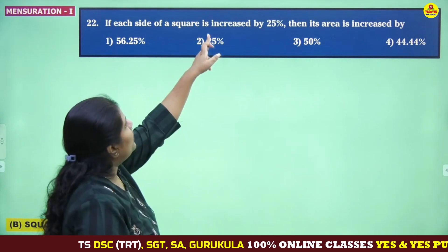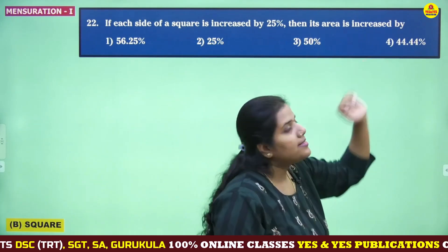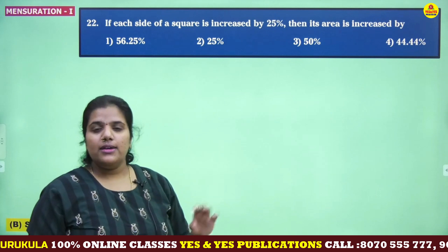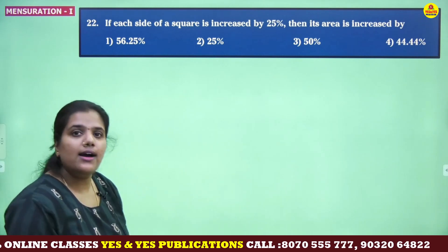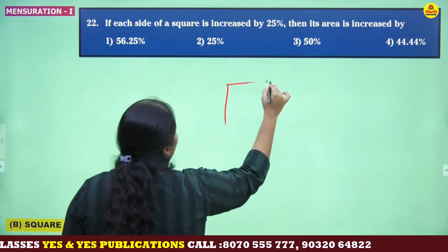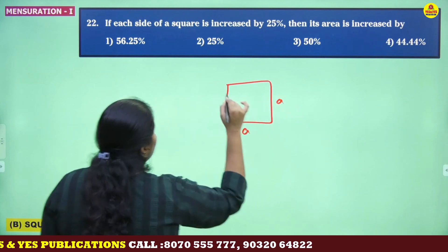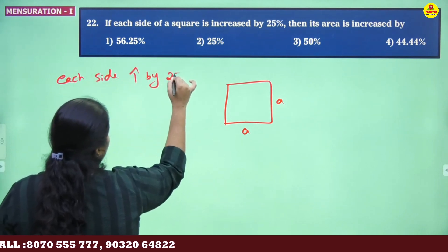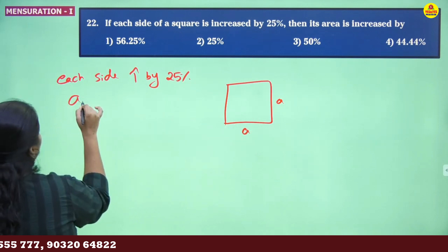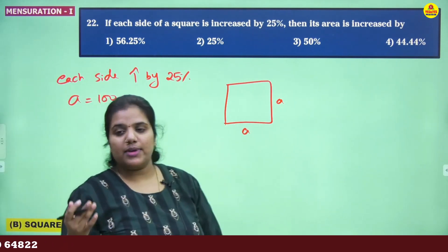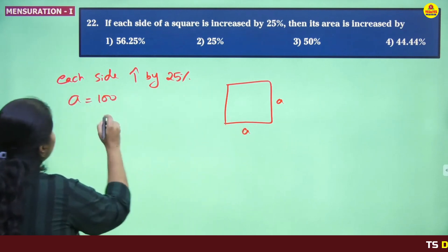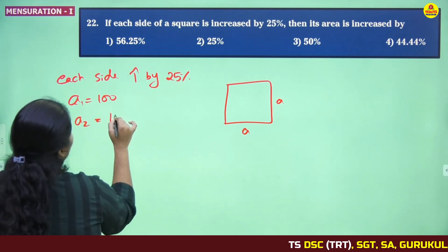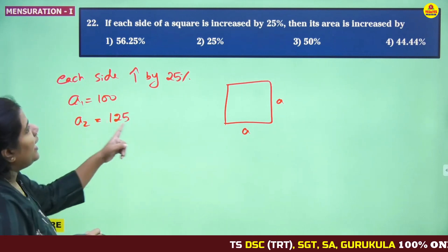Next question: If each side of a square is increased by 25%, then its area is increased by? We have done these kinds of questions in rectangle — the same logic applies here for a square. Nothing is given, so by default we consider the side as 100. Draw the square; side is a. Each side is increased by 25%, so I assume side a is 100 by default. Before increasing: 100. After increasing: 125.